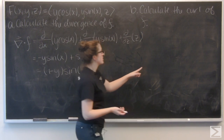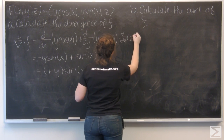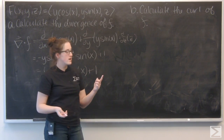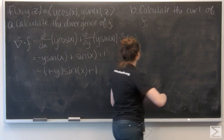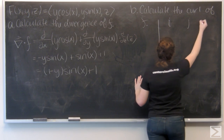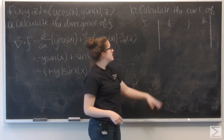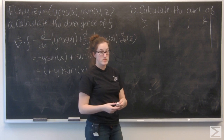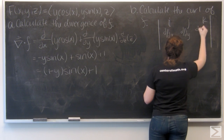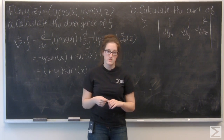Now let's talk about the curl of f. Curl is the cross product of the gradient and f. I like to think about it as taking the determinant of a 3 by 3 matrix — you put i, j, and k on the top, then the partial derivative operators in the middle row, and then the i, j, and k components of the function: y cosine x, y sine x, and z.